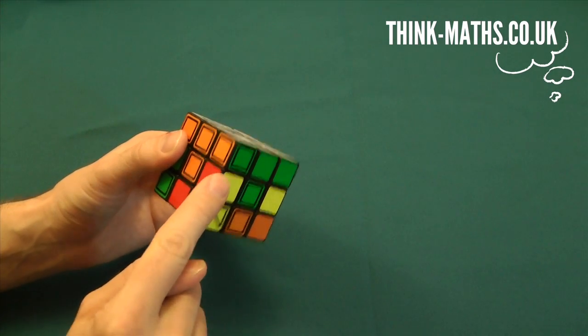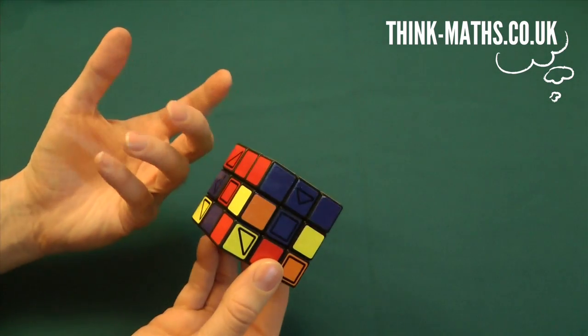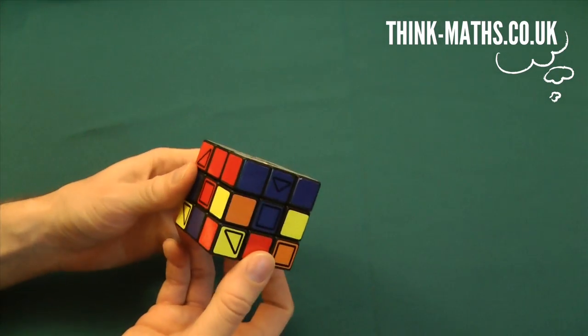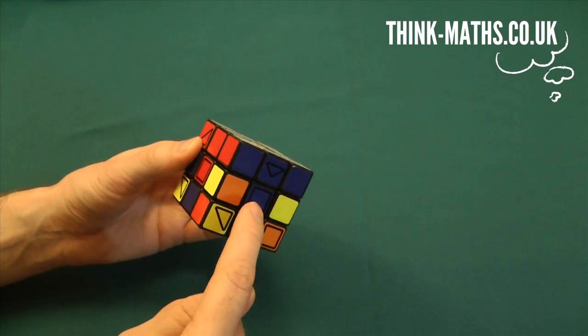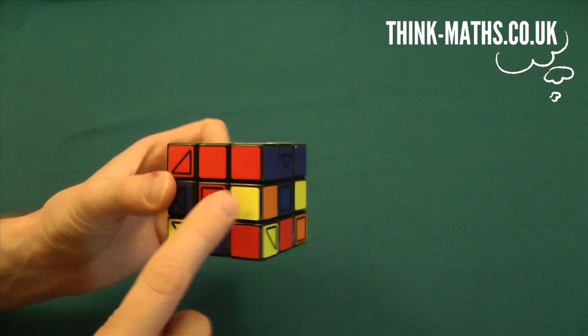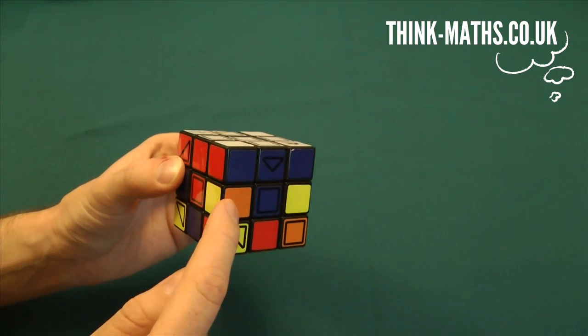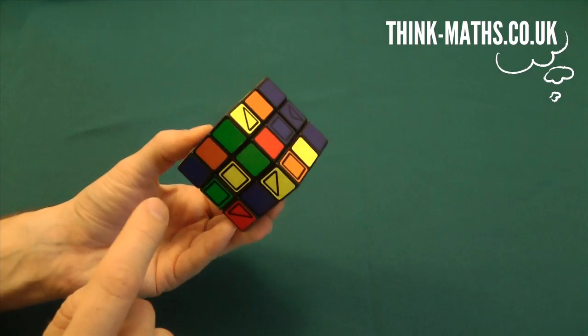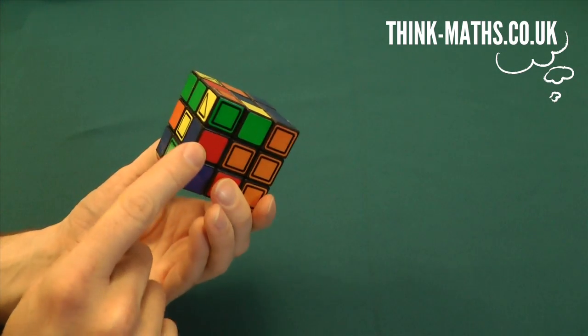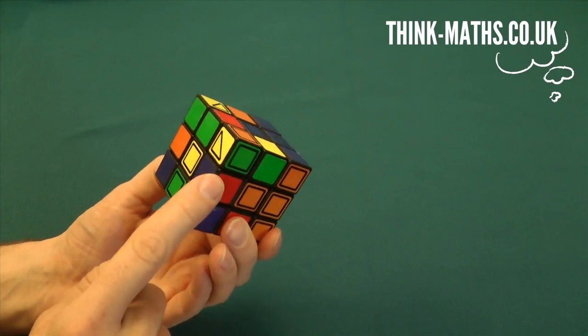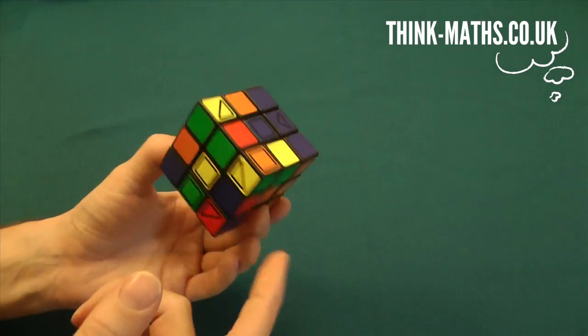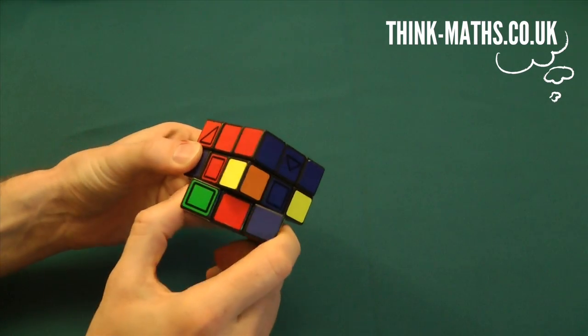To get these edges into place, we do pretty much what we did before. There's a sequence called the edge swap. And so this one here, let's say we need to get the red-blue edge and move it into position. And where's the red-blue edge? Oh, it's over here. So we take this red-blue edge, we put it underneath where we want it, and then we do the edge swap. So if we bring that around over there.